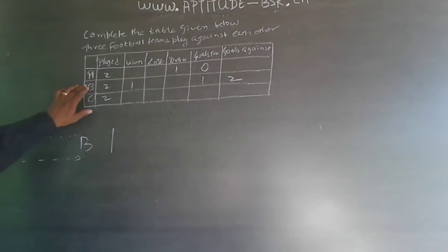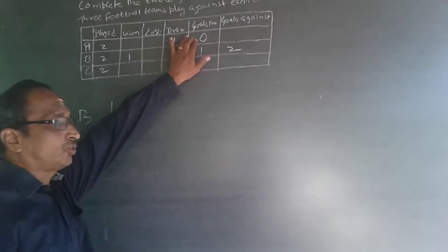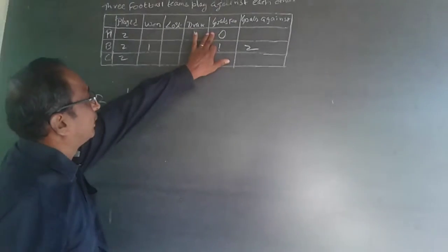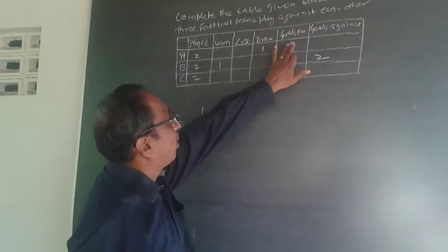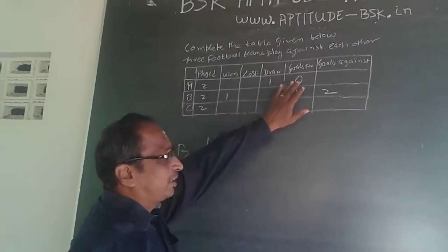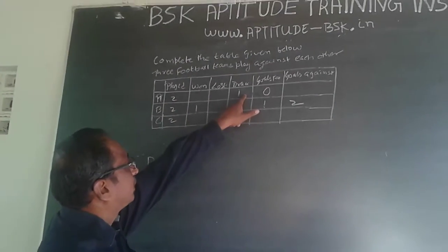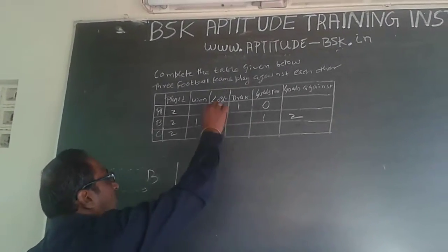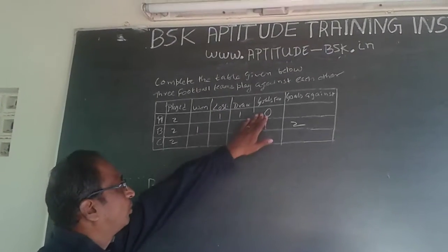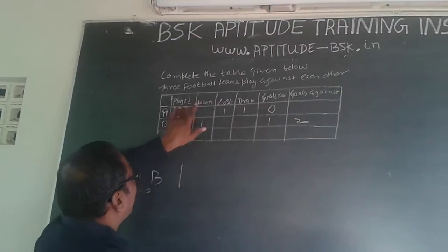Each team has played two games. A has not scored any goal, which implies A cannot win any game. The maximum A can do is only draw. A has played two games, one is draw, so the other will definitely be lost because A is scoring zero goals.